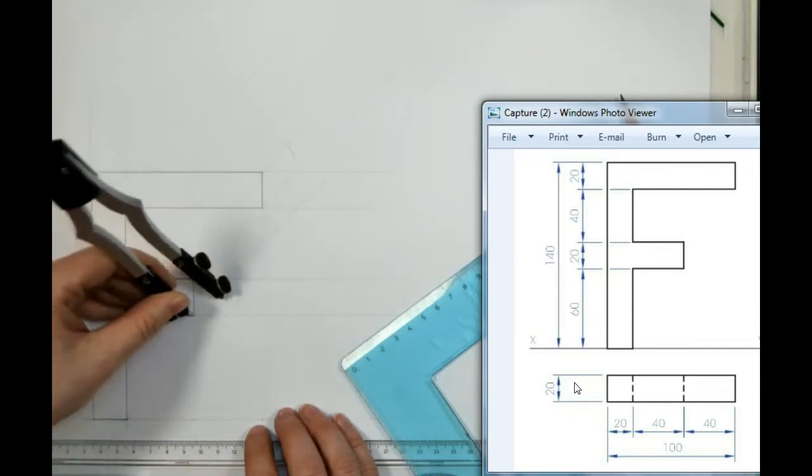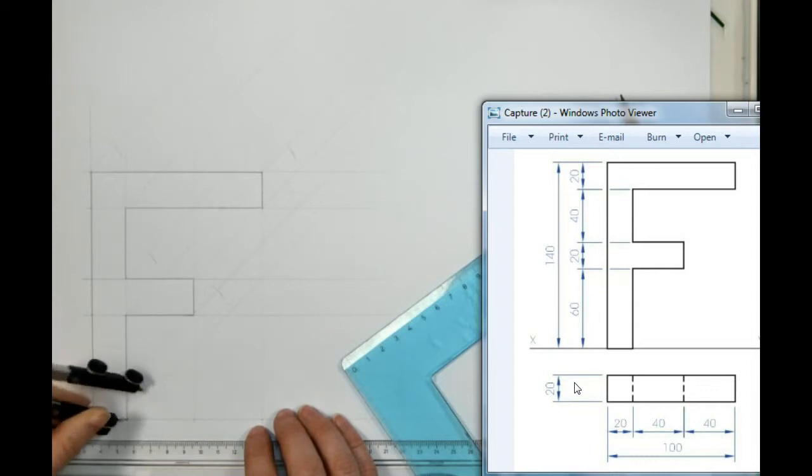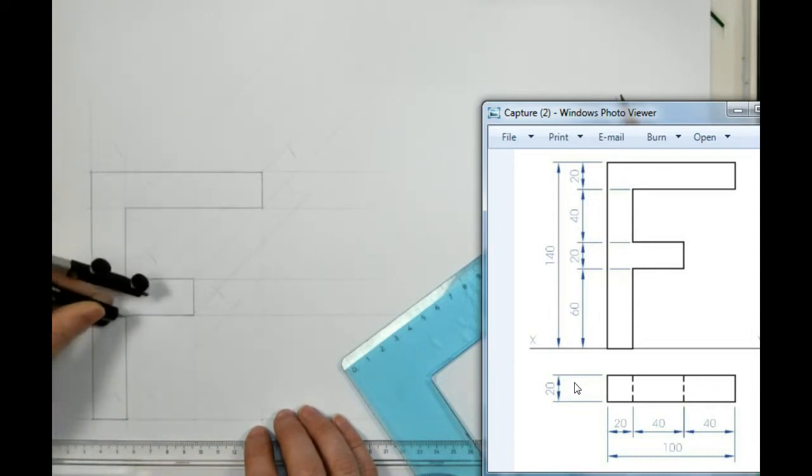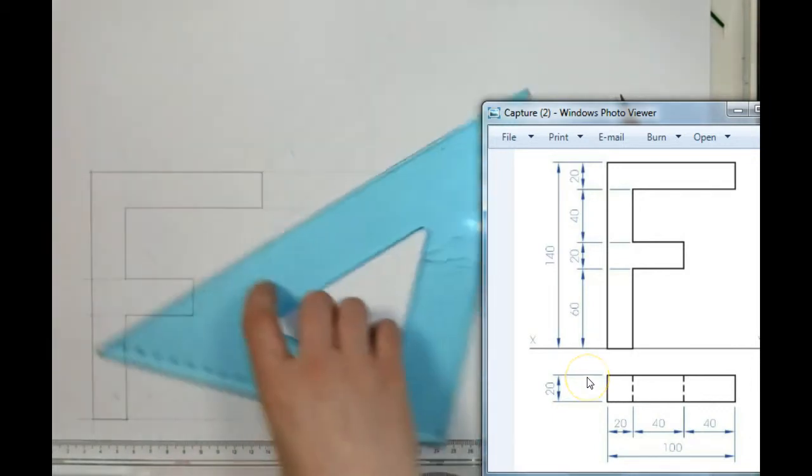We don't draw big, horrible, dark arcs because they take away from the presentation of the drawing. Lovely. Now, we're going to darken in.